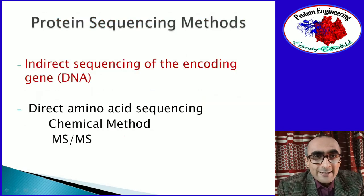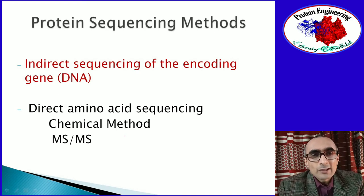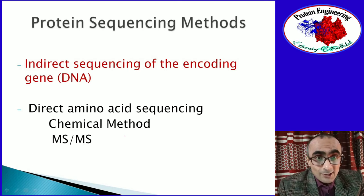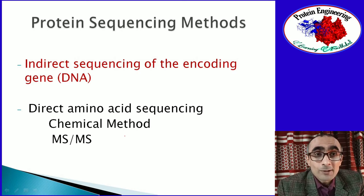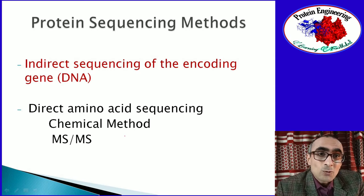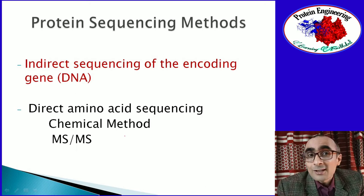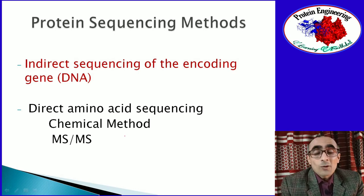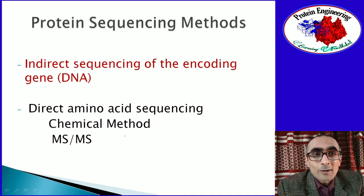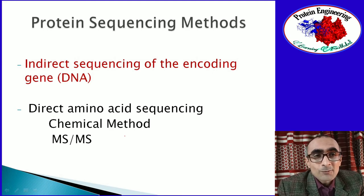There are two ways of sequencing proteins: one is an indirect method and the other is a direct sequencing method. The indirect method relies on the central dogma — proteins are encoded from DNA. So in order to know the sequence of a protein, the DNA sequence of the gene encoding that protein can be determined. Using the genetic code, the triplet of nucleotides in DNA encode for different amino acids, so we can find out the protein sequence from the corresponding gene sequence — that's the indirect method.